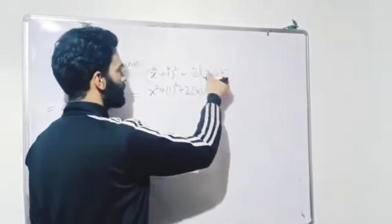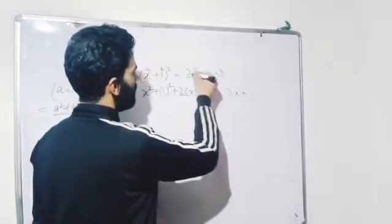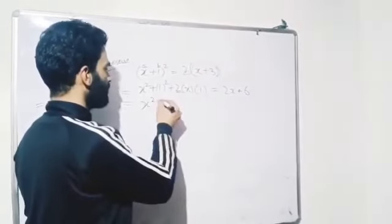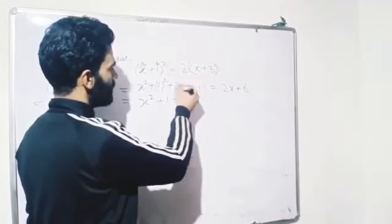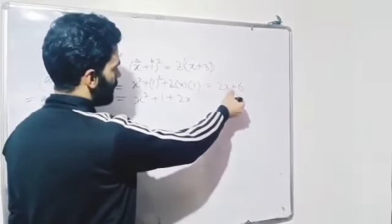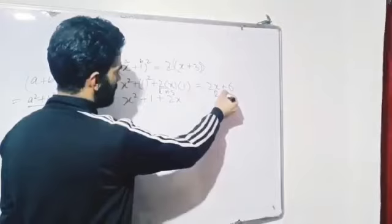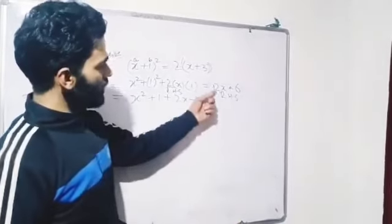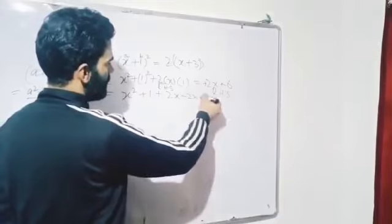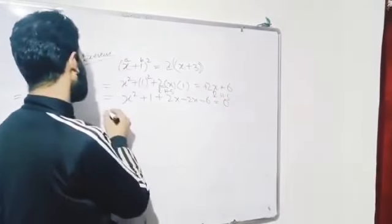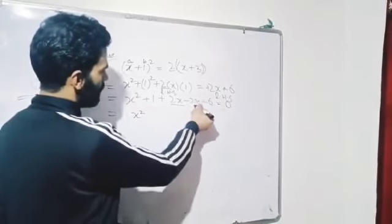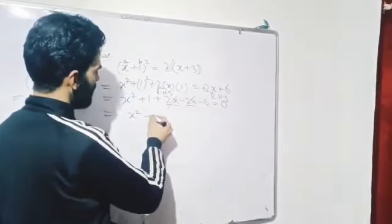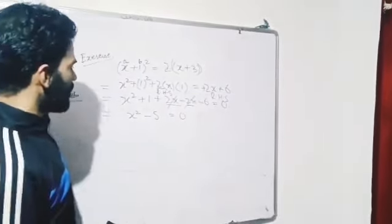The RHS is 2 into x plus 3, which equals 2x plus 6. So LHS is x squared plus 1 plus 2x. Transposing the RHS to the left side: the 2x terms cancel, and 1 minus 6 gives minus 5. So we get x squared minus 5 is equal to 0.